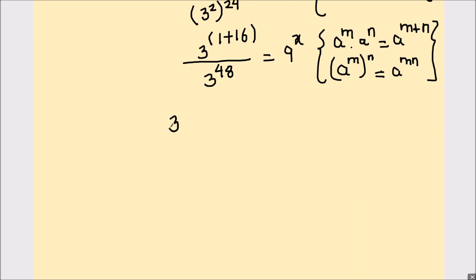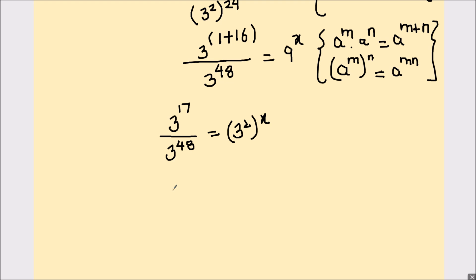Now the numerator is 3 raised to power 17 and the denominator is 3 raised to power 48. On the right hand side, 9 raised to power x can be written as 3 squared whole raised to power x, which gives 3 raised to power 2x. So we have 3 raised to power 17 minus 48 equals 3 raised to power 2x.